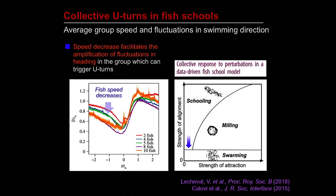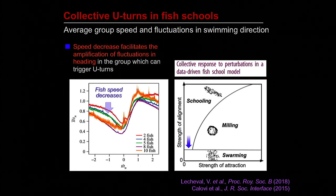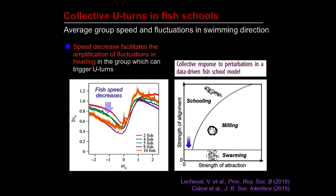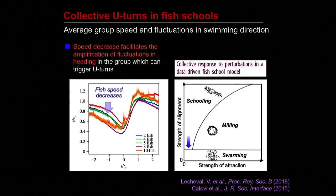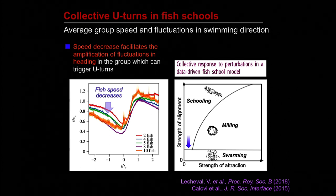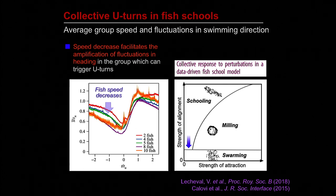We also found that all collective U-turns are preceded by a period during which the school slows down. As fish speed decreases, the school is in a state close to a transition between a schooling state — characterized by strong alignment between fish — and a swarming state, characterized by weak alignment. In previous work, we showed that when a school is close to this transition, fluctuations in the swimming direction of fish increase, and the school as a whole becomes very sensitive to perturbations affecting a single fish. This may explain why all U-turns occur after the group has collectively slowed down.